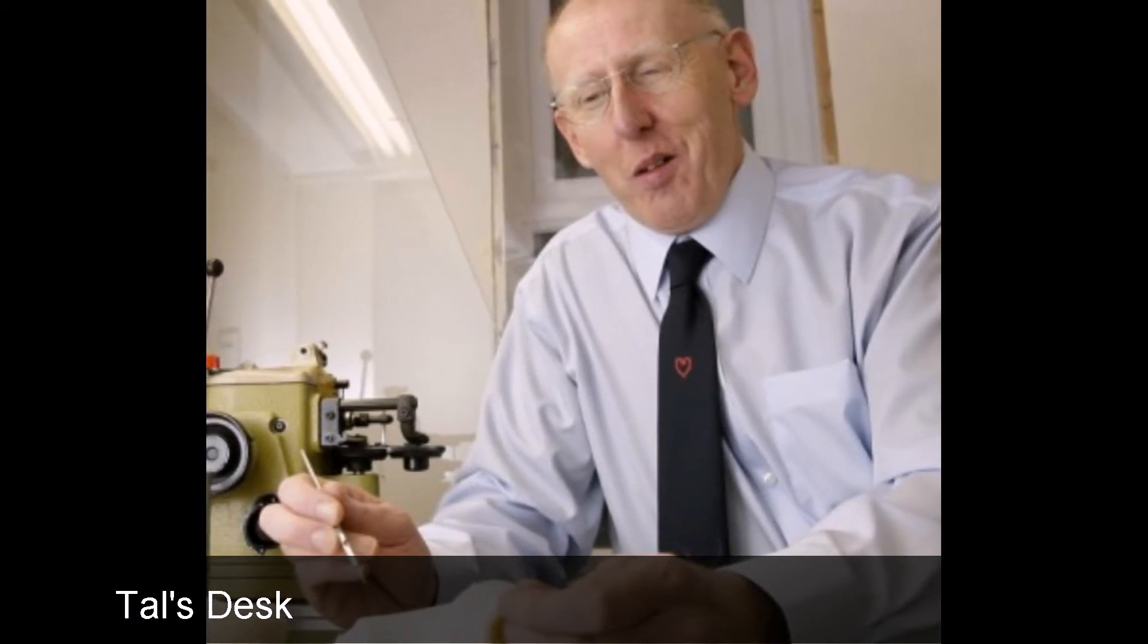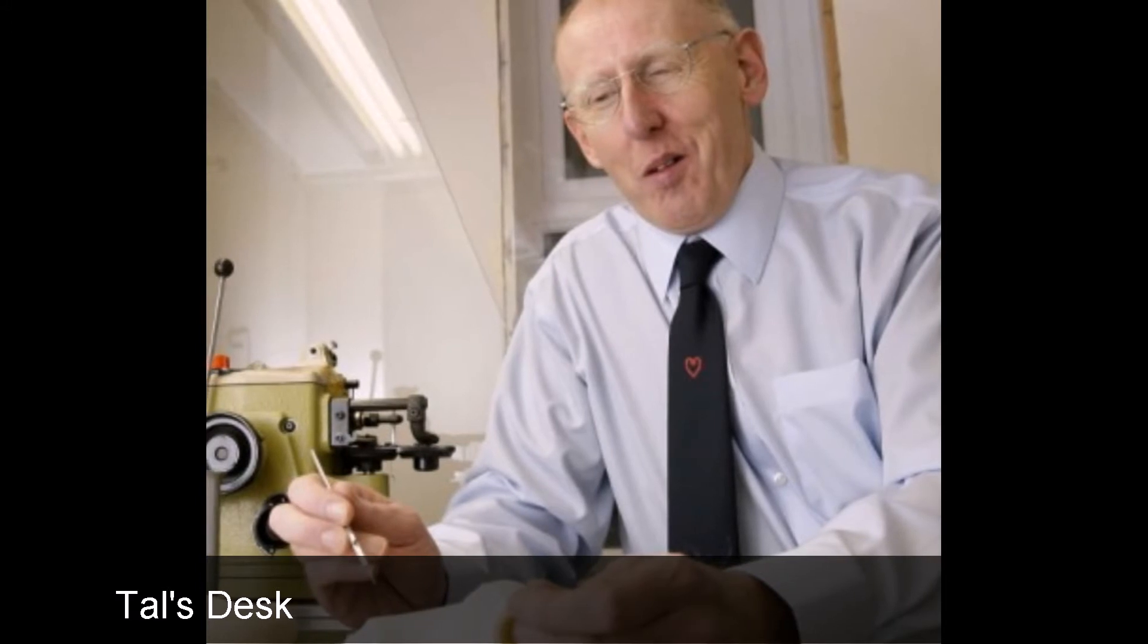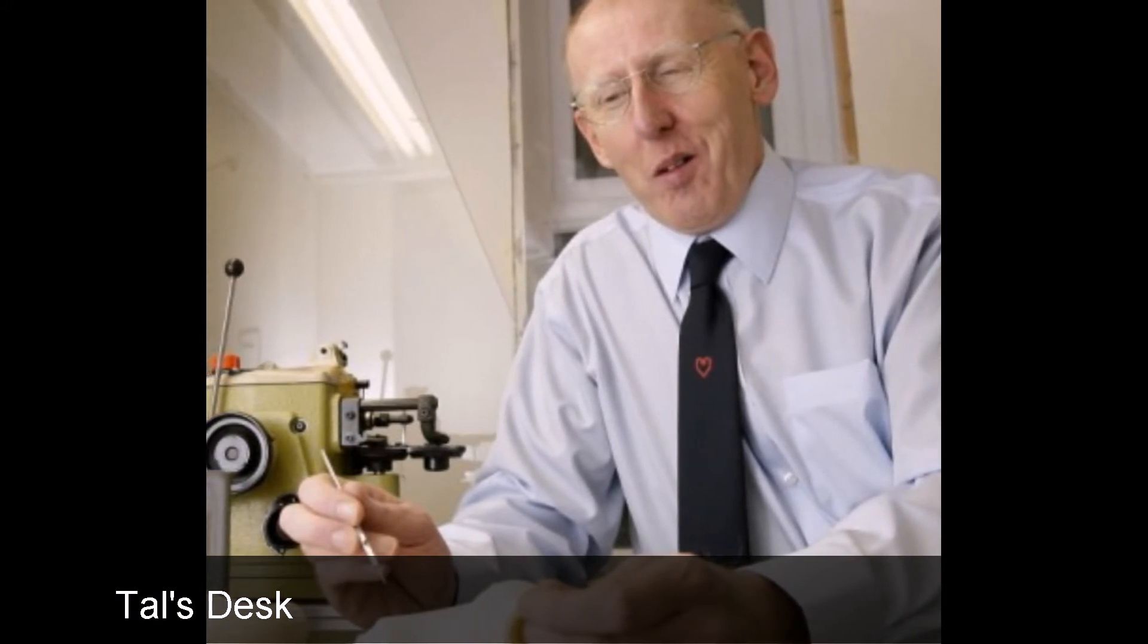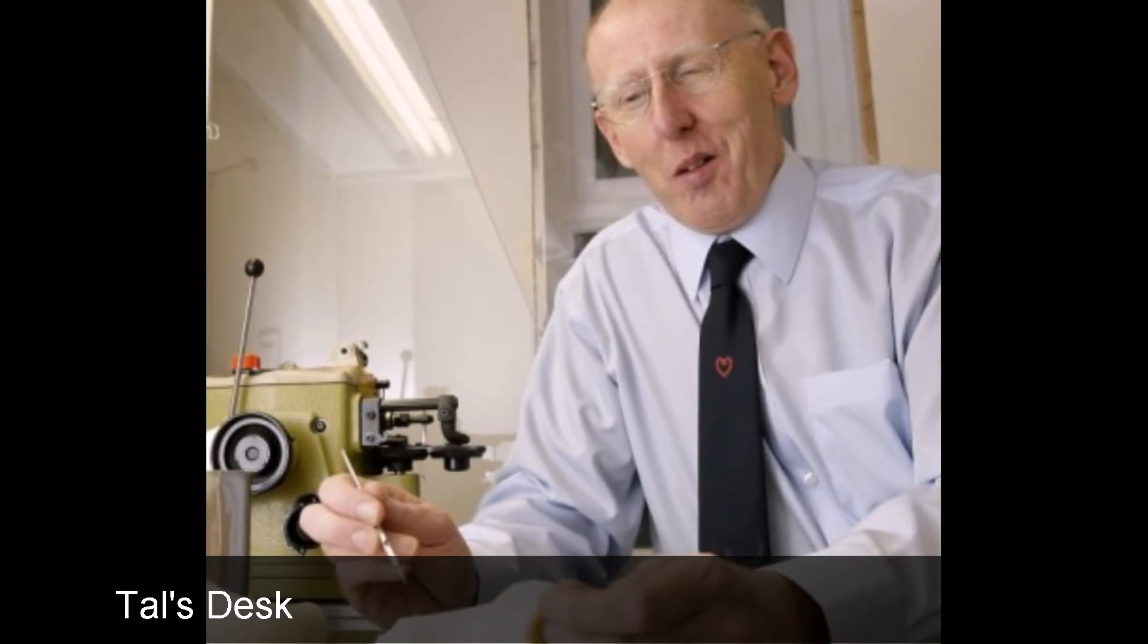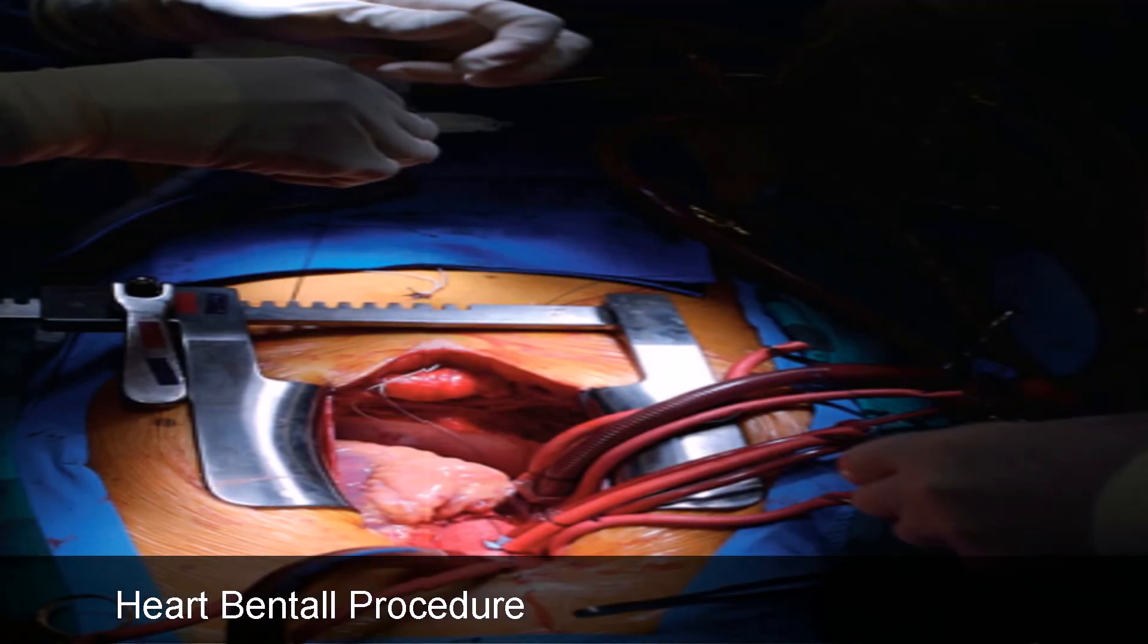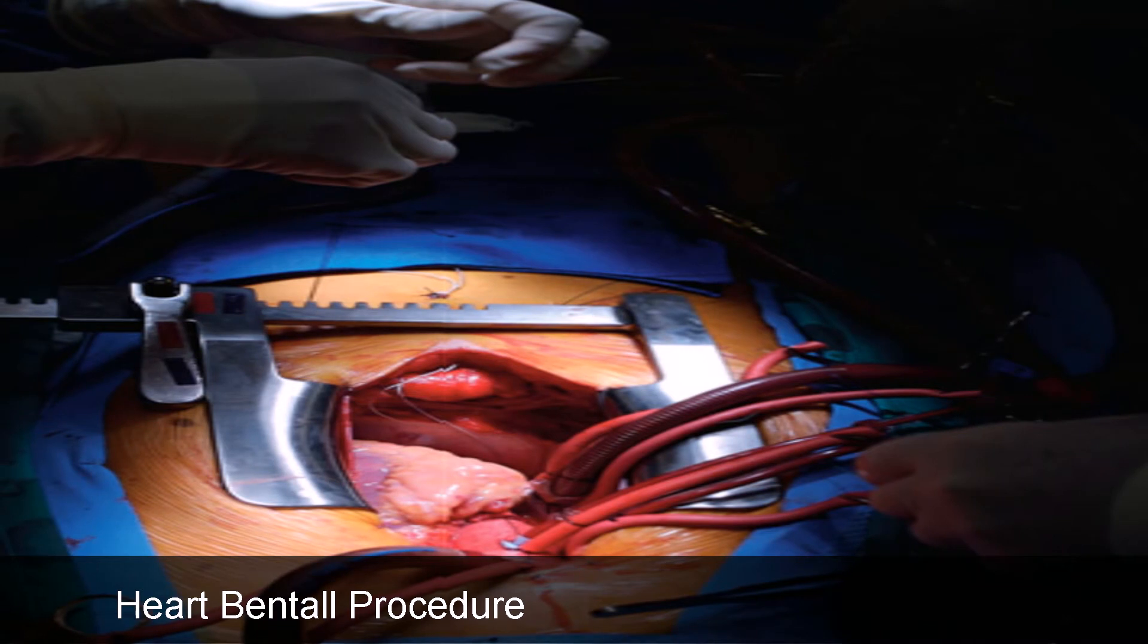In Tal's case, his aortic root dilations read in at 4.4, with the normal range being in the 3.2 to 3.6 range. His aorta kept dilating until his surgeon told him he must go through the Bentall graft open-heart surgery process to save his life.